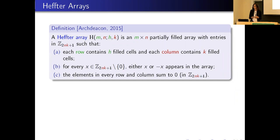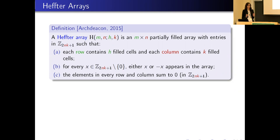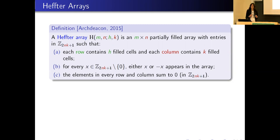A Heffter array depends on four parameters generally denoted by m, n, h, and k. It is an m times n array such that each row contains exactly h filled cells and each column contains exactly k filled cells. The array is partially filled - a cell can also be empty - and if it's not empty it contains an element of the cyclic group of order 2nk plus one. We require that for every non-zero element of this group, say x, exactly one between x and minus x appears in the array.